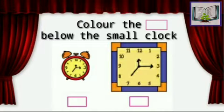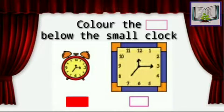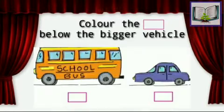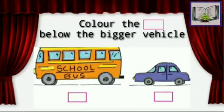So which is the small clock? We have to color it, right? This is the small clock. Color the square below the bigger vehicle. So which is the bigger vehicle?